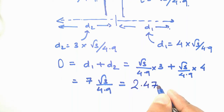Adding both distances — since both balls are moving in opposite directions — gives the total distance between them. This is what we are looking for, and this problem becomes really easy once you know the concept of the dot product.